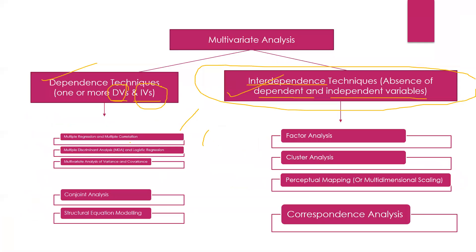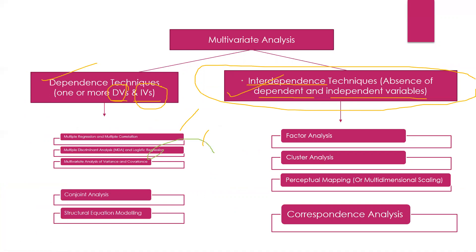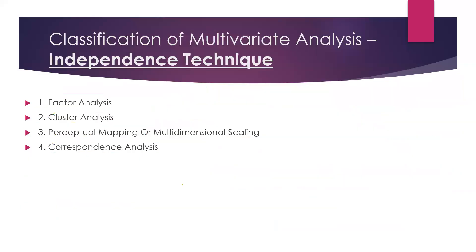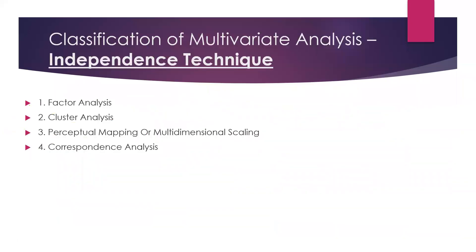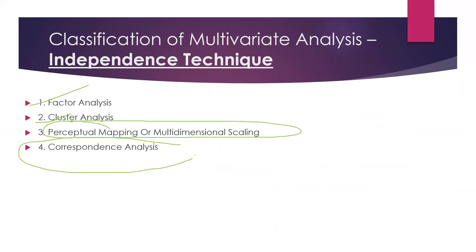Now the second category — interdependence techniques. These include factor analysis, cluster analysis, perceptual mapping, and correspondence analysis. I have already covered factor analysis and cluster analysis in my past videos — you can go there and check with clear-cut examples. Perceptual mapping and correspondence analysis I will explain with examples in upcoming videos.